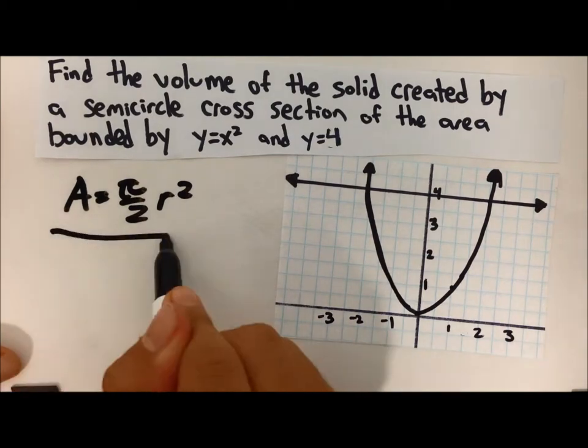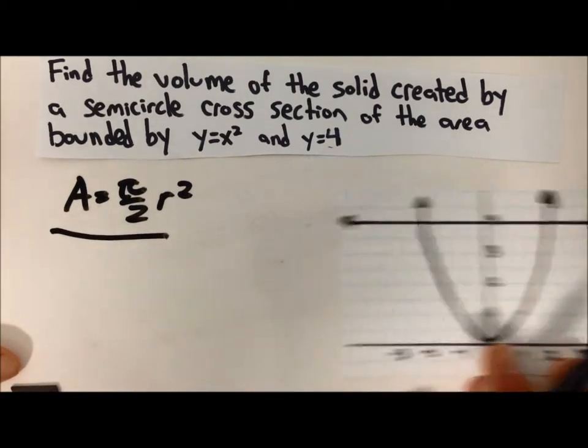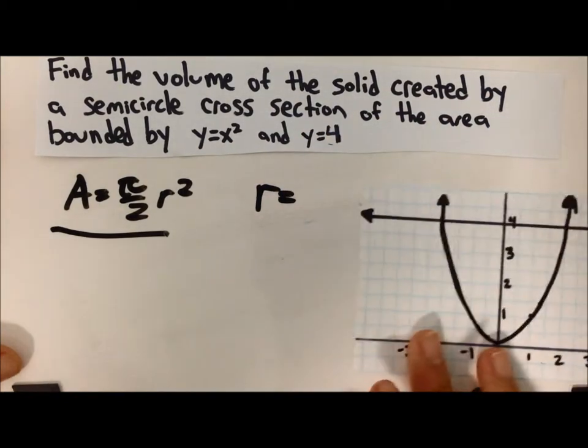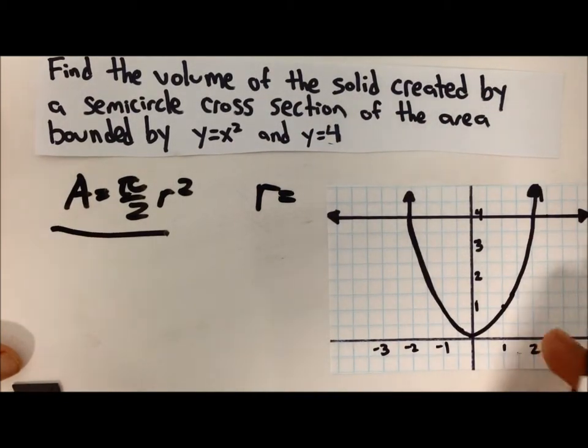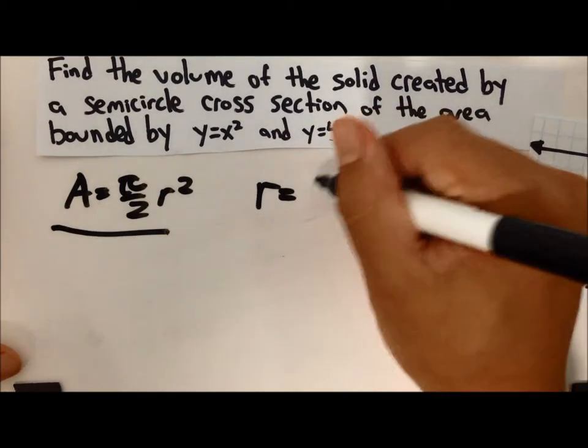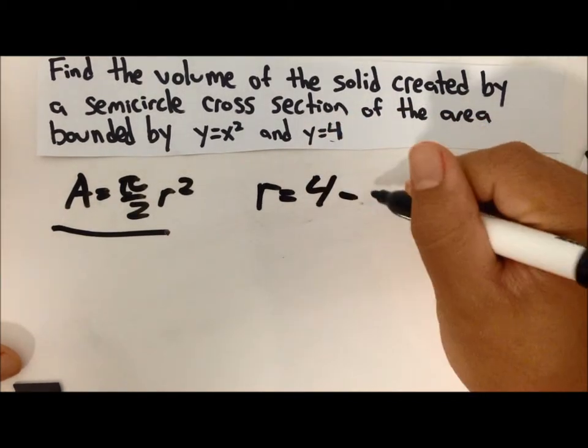Which is for the semicircle. And to define r, we do top minus bottom of this function. So y equals 4 is above x squared, so it would be 4 minus x squared.